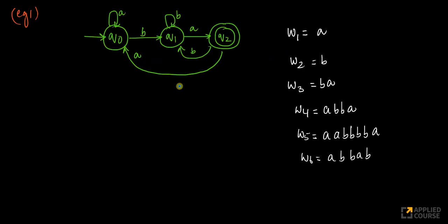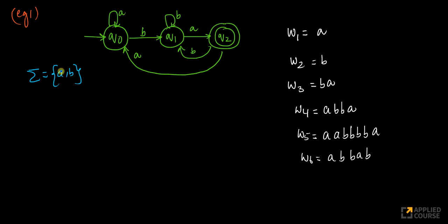Look at this finite automaton. This is my initial state, this is my final state, and there are three states in total. My input alphabet here is a and b, so my input string could be built using a and b.